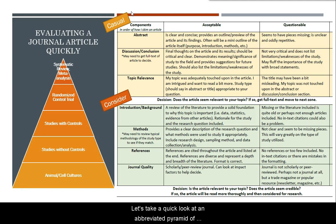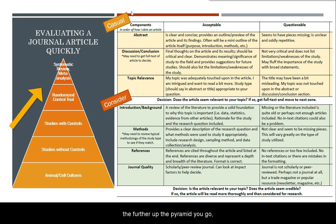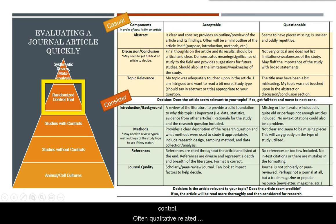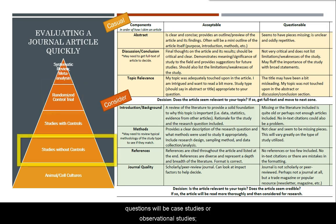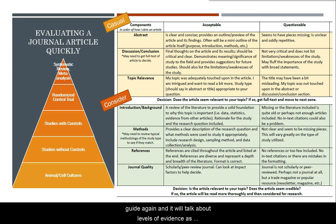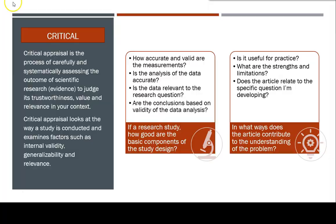Let's take a quick look at an abbreviated pyramid of evidence. Listed are study types, and the further up the pyramid you go, the higher the level of evidence — each level seeks to answer a different type of question. Randomized control trials (RCTs) have low bias because of their randomization and control. Qualitative-related questions will often be case studies or observational studies listed without controls. See the evidence-based practice guide for more on levels of evidence and study types.